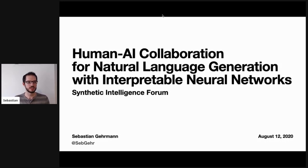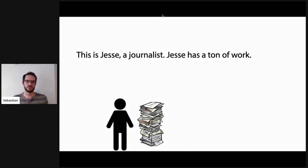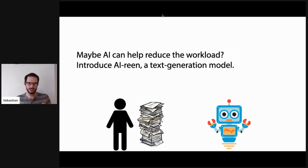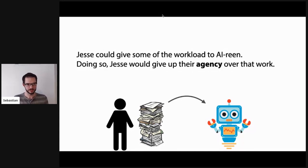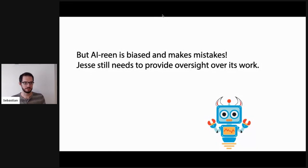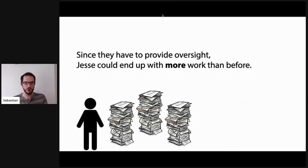Let me set up a scenario where we have Jesse, who is a journalist with a ton of work. A machine learning engineer comes along and says we can automate part of that. Let us introduce Irene, who is a text generation model. Maybe Irene can help alleviate some of Jesse's burden. Jesse could give some workload to Irene, naturally giving up agency over that part of work, and Irene would fully autonomously generate text. But unfortunately, Irene is biased and makes a lot of mistakes, so Jesse still needs to provide oversight, which can actually lead to Jesse ending up with more work than before.